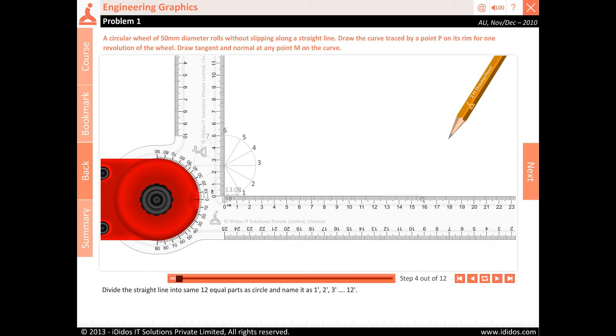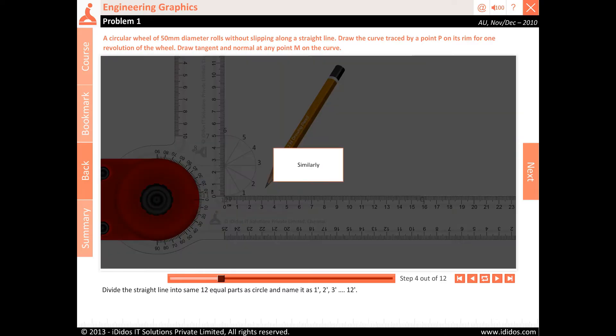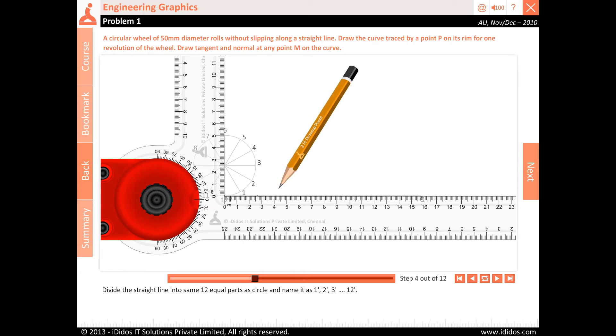Divide the straight line into the same 12 equal parts as the circle and name it as 1, 2, 3, 4, 5, 6, 7, 8, 9, 10, 11, 12.